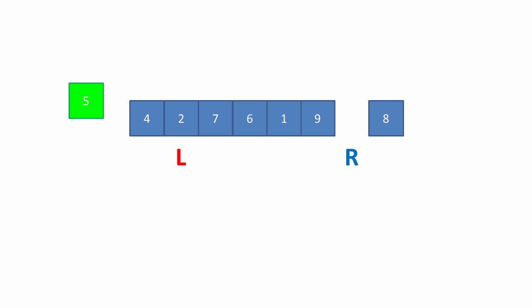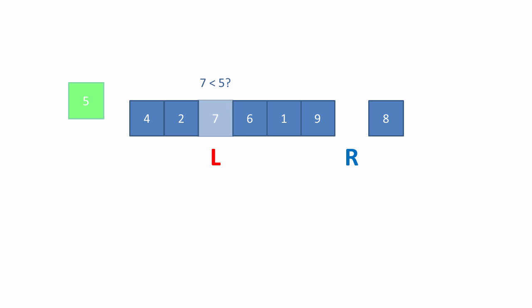And we ask the question: is the value at the left pointer less than the pivot value? In this case, the answer is yes — two is less than five. So we simply advance the left pointer. And because we've advanced the left pointer, we ask: is seven less than five? This time the answer is no, so we're going to move the seven to the right-hand pointer.